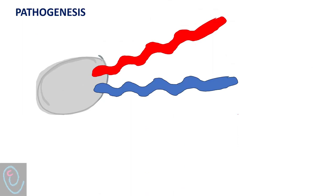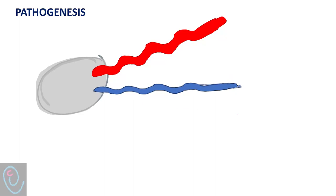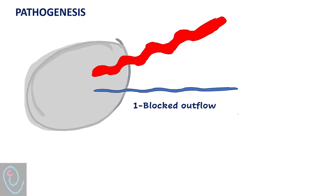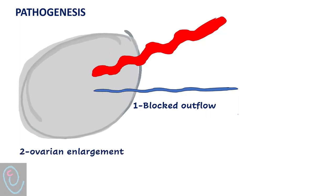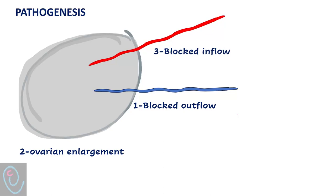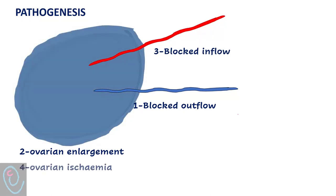Torsion results in compression of the ovarian vessels. Initially, venous outflow is blocked because the wall of the vein can easily be compressed, while arterial perfusion is maintained because the muscular arteries are less compressible. This results in ovarian edema and significant enlargement. Later on, the enlarged ovary will compress the arterial wall, resulting in ovarian ischemia, which can eventually lead to necrosis, infarction, and local hemorrhage.